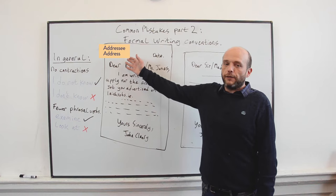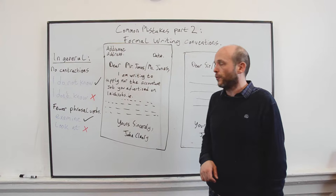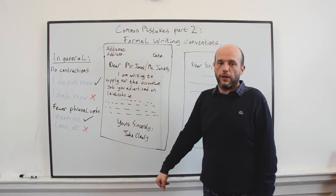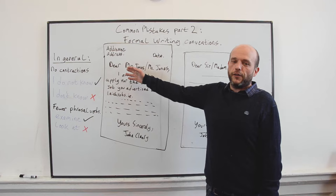Well, at the top left you have the addressee address. That's the address of the person you are writing to. So you can put in their name, their job title, and the company address perhaps. On the right hand side you put the date and then you start addressing them.